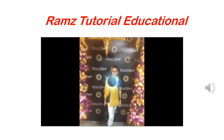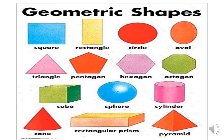Geometry. When you see geometry with your viewers, the geometrical shapes. We have the square, rectangle, circle, oval, triangle, pentagon, hexagon, octagon, cube, sphere, cylinder, cone, rectangular prism, and pyramid.